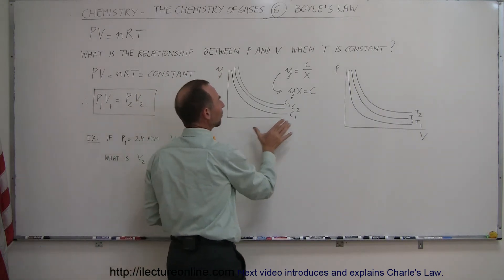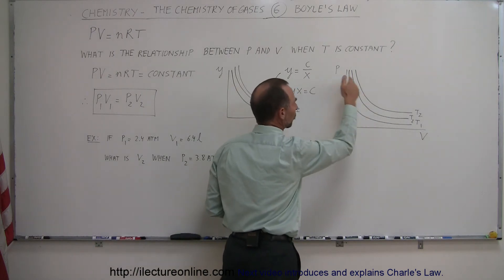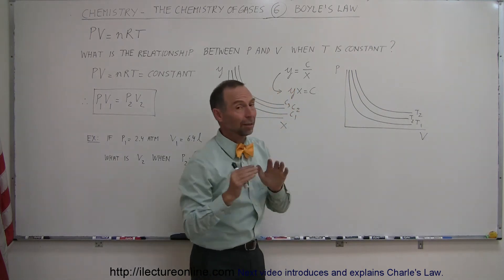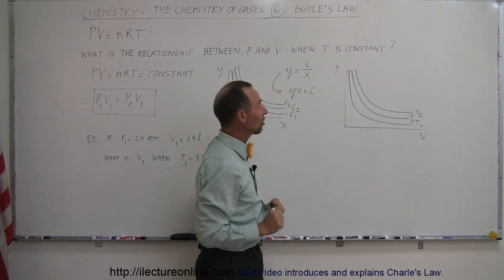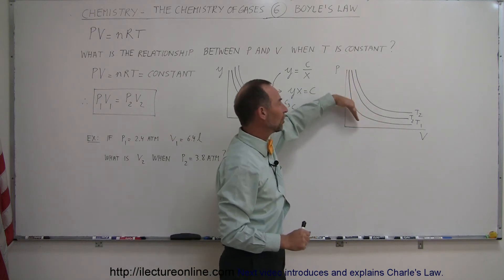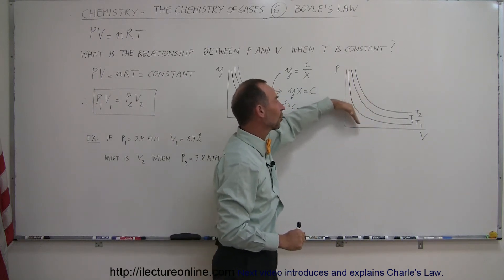So that means that we can have the exact same graph for a pressure versus the volume. And again, depending upon what temperature we have the gas at, remember with Boyle's Law, we don't change the temperature. Now for different temperatures, we'll have a different curve. The shape of the curve will be the same, it'll just be in a different location.